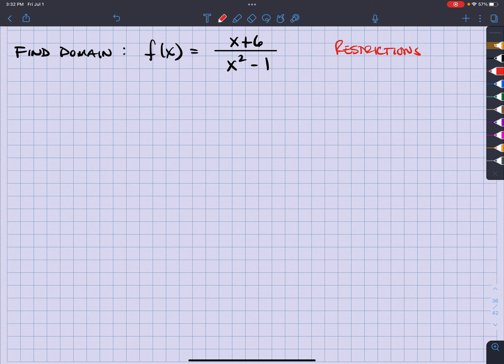To find restrictions, what I want to do is take the denominator and set it equal to zero. But before I even do that, let's go ahead and simplify this to f of x equals x plus 6 over x minus 1 times x plus 1. In other words, we want to factor everything.